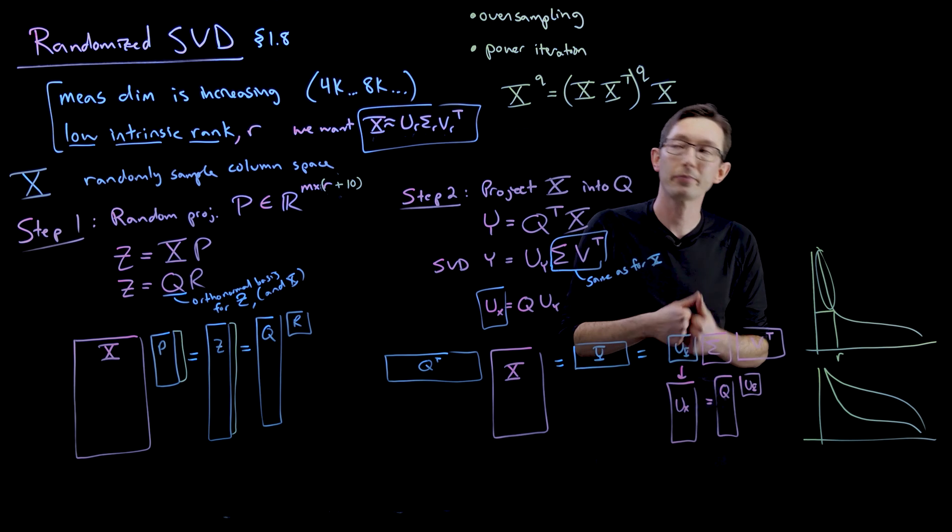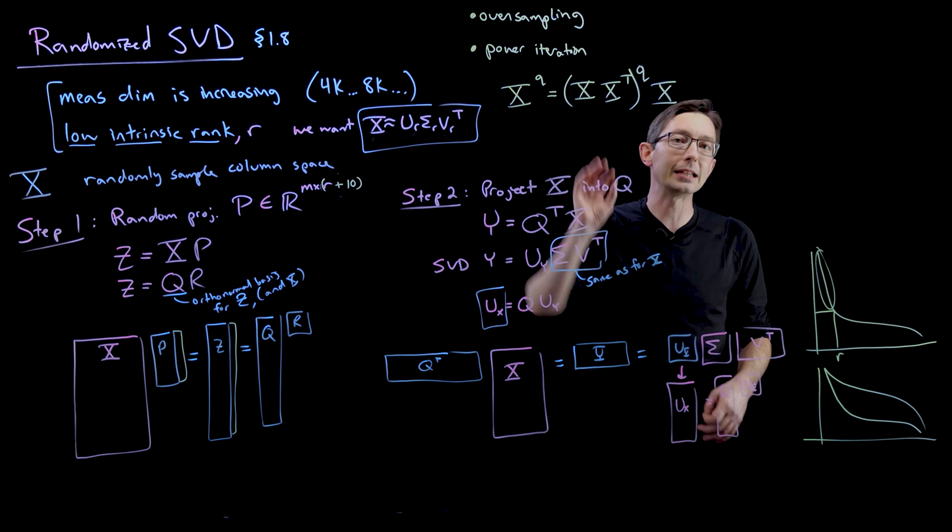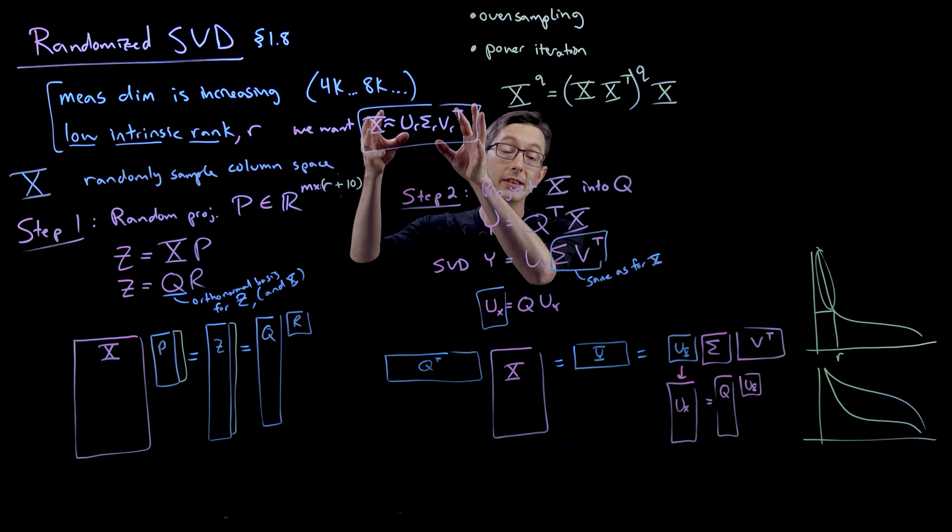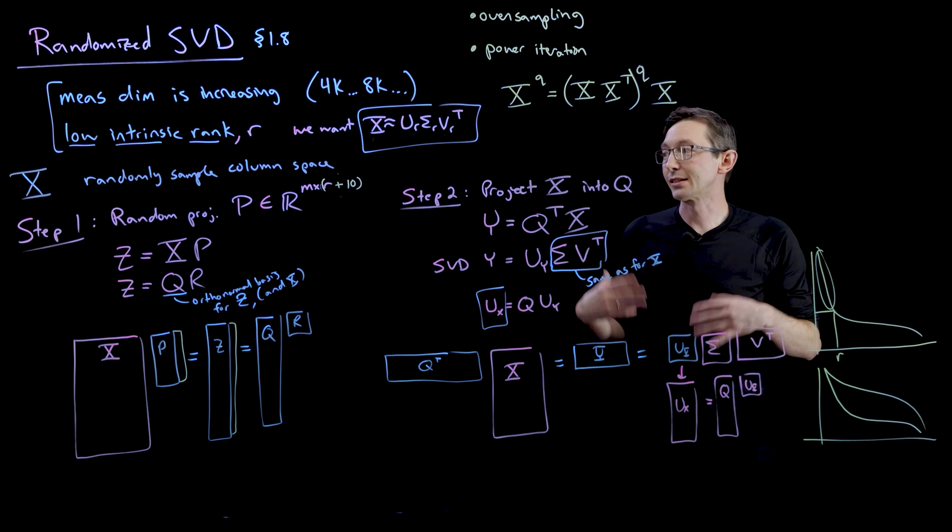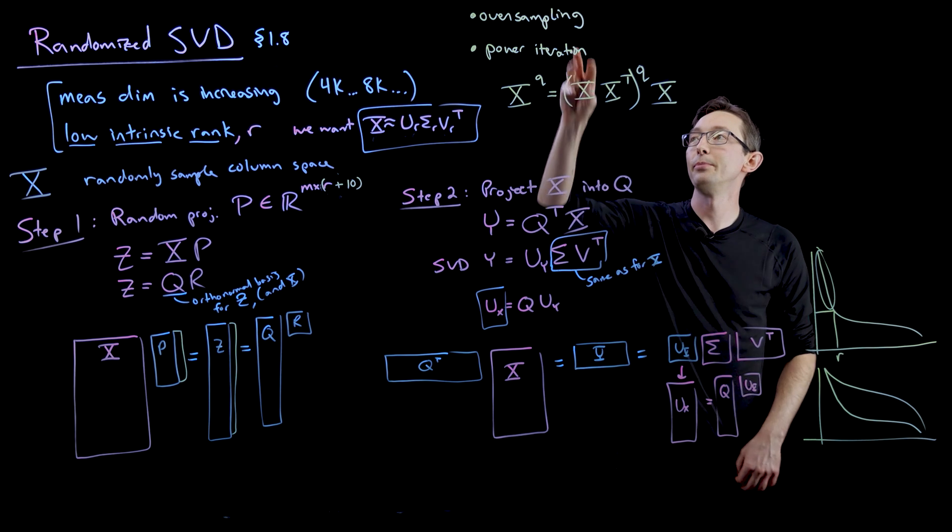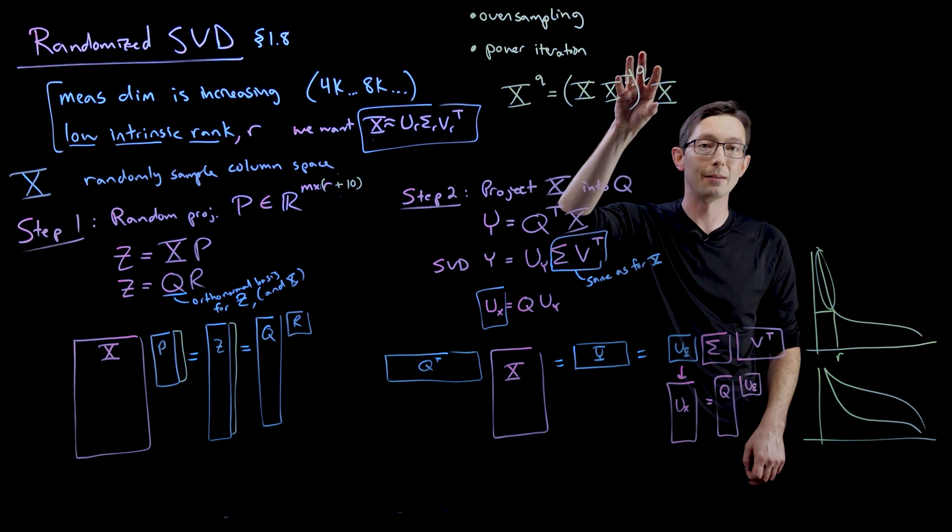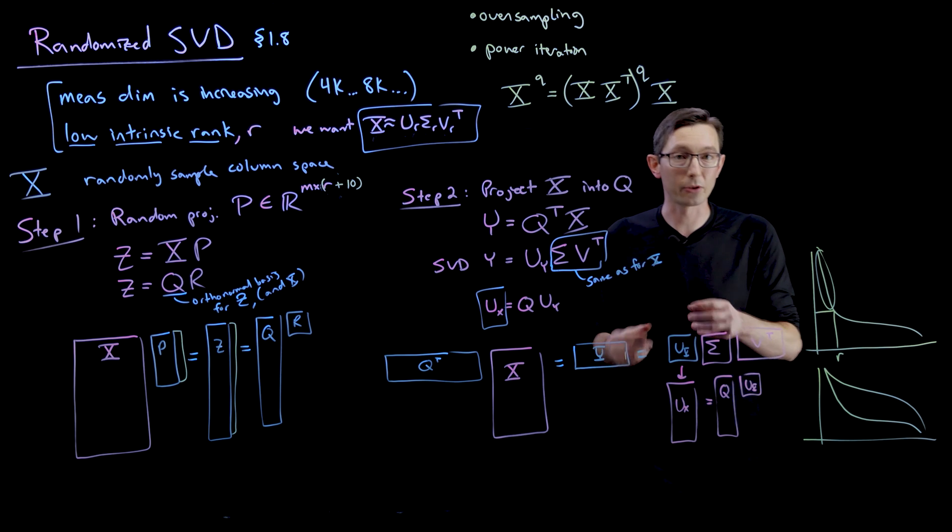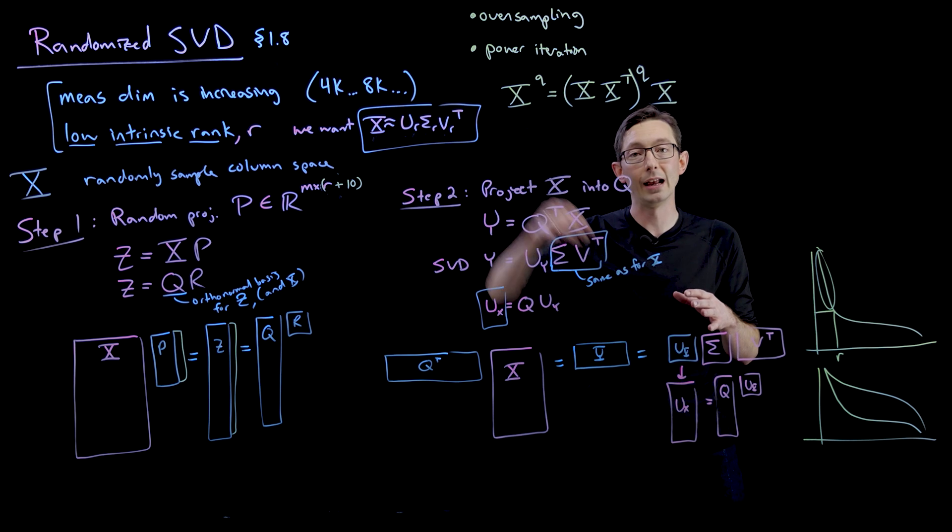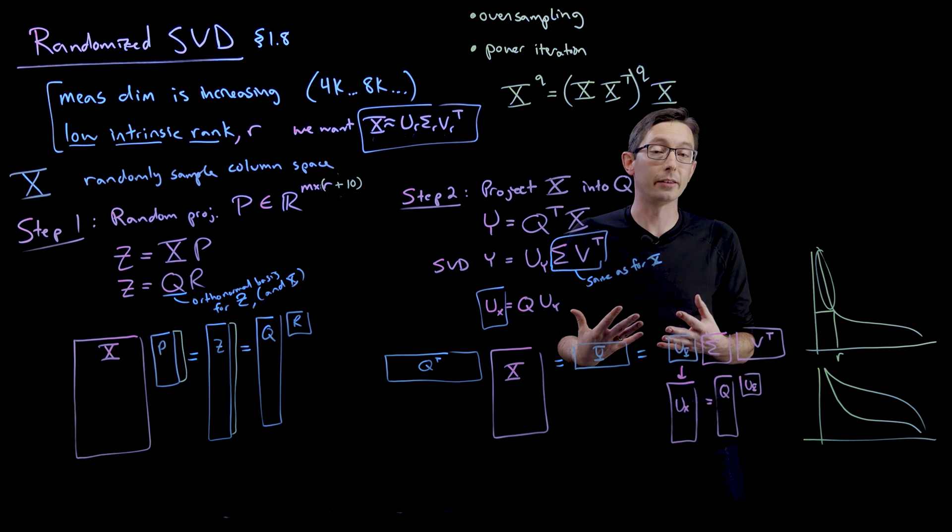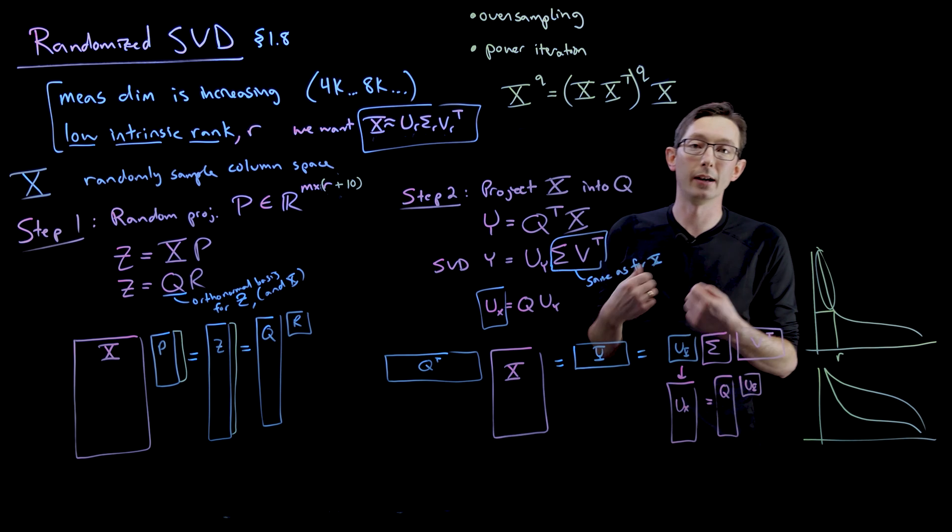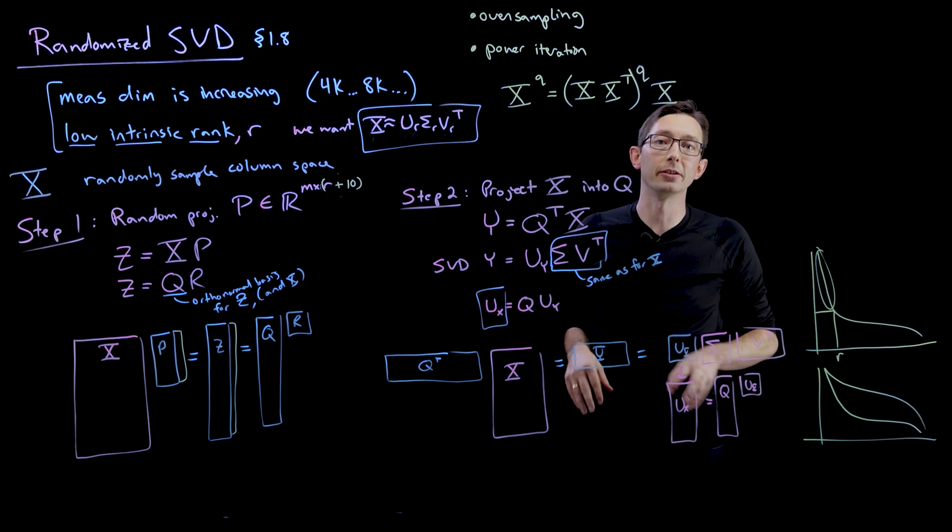There are guaranteed error bounds for the approximation performance of this low rank singular value decomposition based on things like the rank, the singular value distribution, the amount of over-sampling, the amount of power iterations, and so on. The simple formula is in our book in section 1.8, but there are more elaborate formulas in the literature that have tighter bounds that can give you really good guidelines for how to choose these values for your particular application.